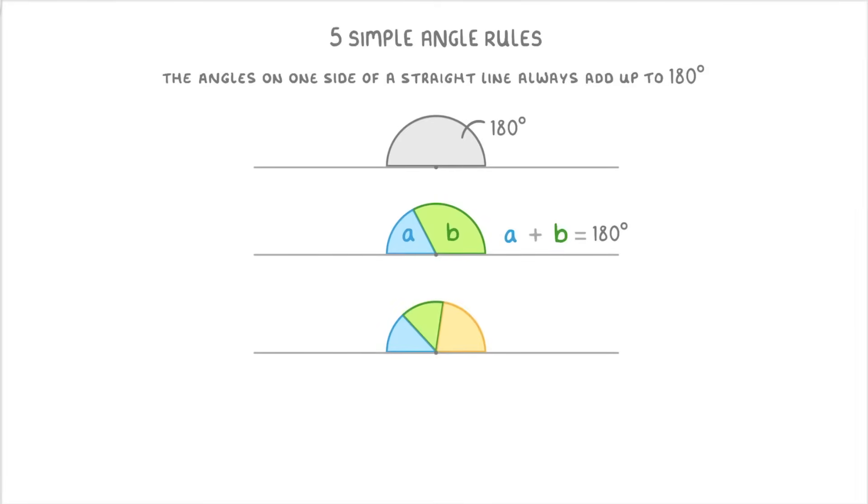Or if we have a point with three angles, a, b, and c, then those angles would all add up to 180 degrees. And so on for however many angles we had.